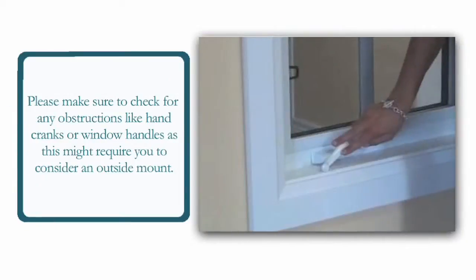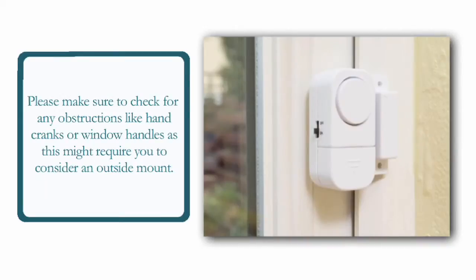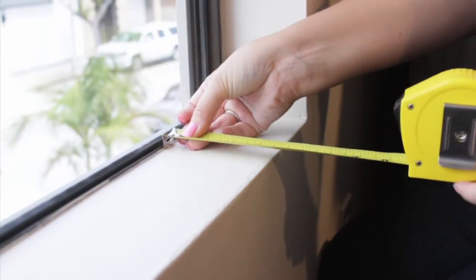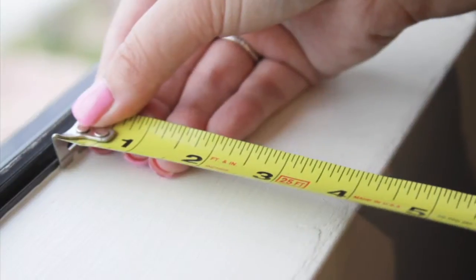Please make sure to check for any obstructions like hand cranks or window handles, as this might require you to consider an outside mount. Also, consider the depth of your window frame if you prefer a flush look.